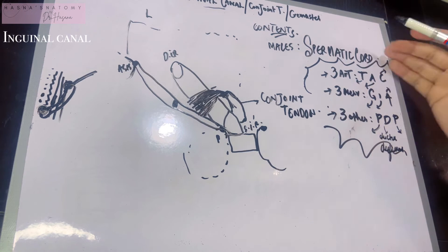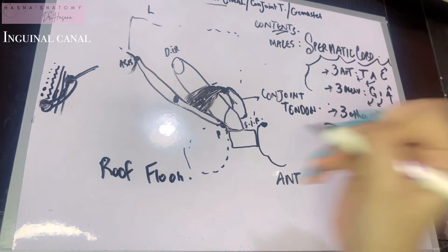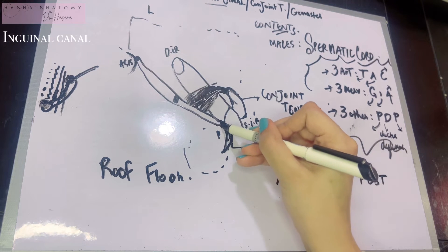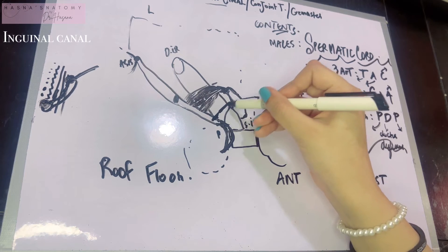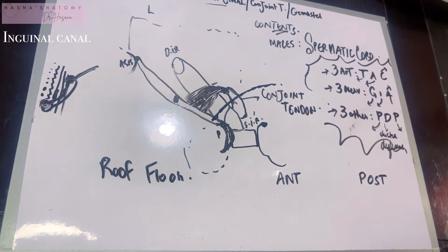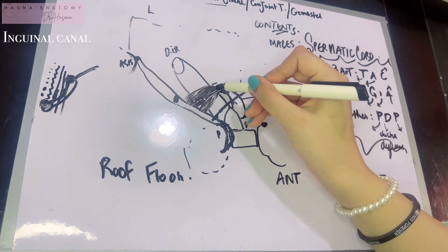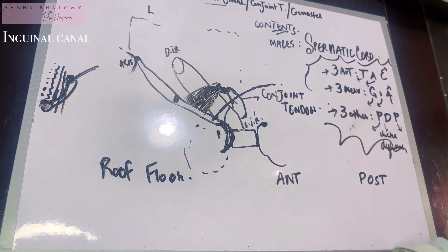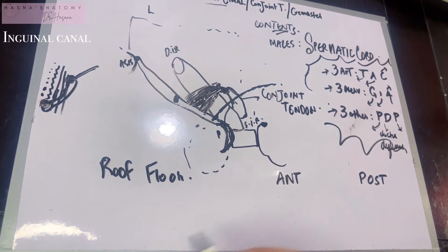Now let's talk about the boundaries of the inguinal canal. The inguinal ligament at its medial most end becomes the lacunar ligament. The inguinal ligament has some fibers that run to the opposite external oblique aponeurosis — this is known as the reflected part of the inguinal ligament. There is also another ligament running from the transversus abdominis all the way to the superior ramus of the pubis, known as the interfoveolar ligament.